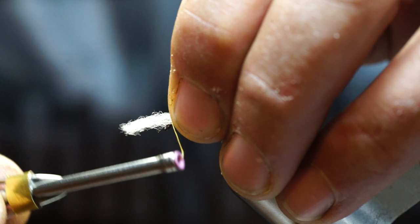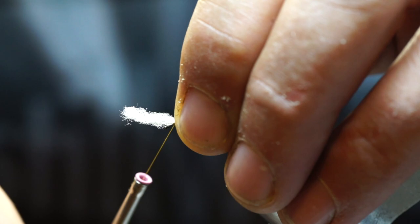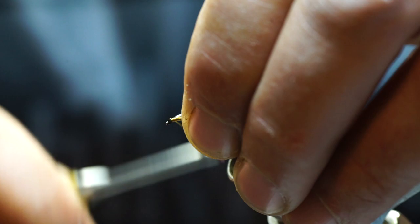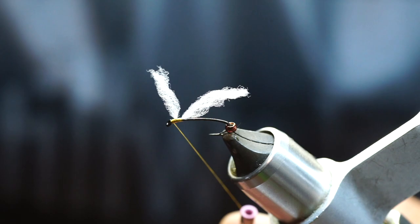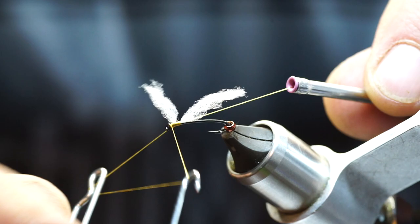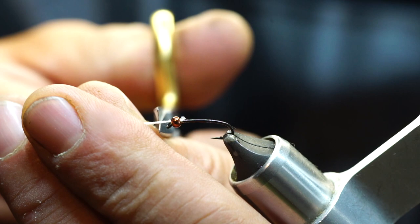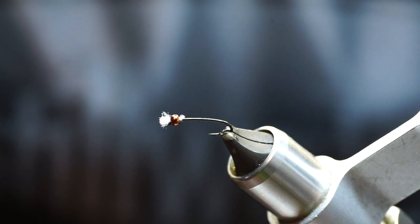Alright, so we'll grab the Uni and wrap in to the front of the eye. Now, what I like to do is build up a bit of a bump in the front here. This will help the material not crowd the hook eye. And then, quick whip finish. Remove excess thread. Remove excess gill material and slide back over the hook. And then what I like to do is pull tight, about the same depth as the bead. And there's your gill material.